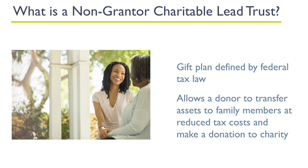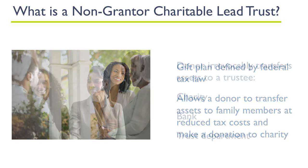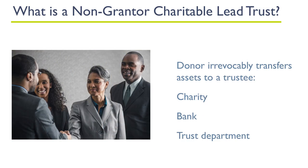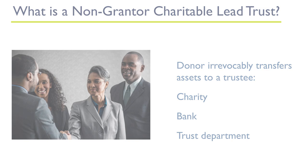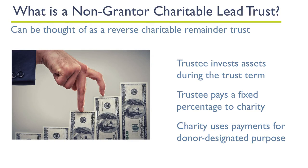The last vehicle we will talk about is the charitable lead trust. A non-grantor charitable lead trust is a gift plan defined by federal tax law that allows a donor to transfer assets to family members at reduced tax costs while making a generous gift to charity. As a non-grantor lead trust donor, the donor irrevocably transfers assets — usually cash or securities — to a trustee of their choice, for example their charity or a bank or trust department. During the lead trust term, the trustee invests the trust assets, and each year the trustee pays a fixed percentage to the charity. These payments are used for the charitable purpose the donor has designated.